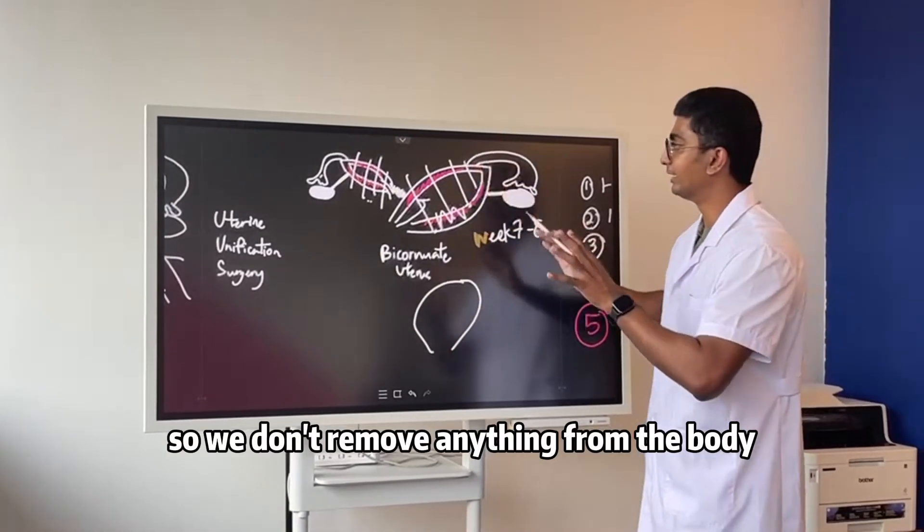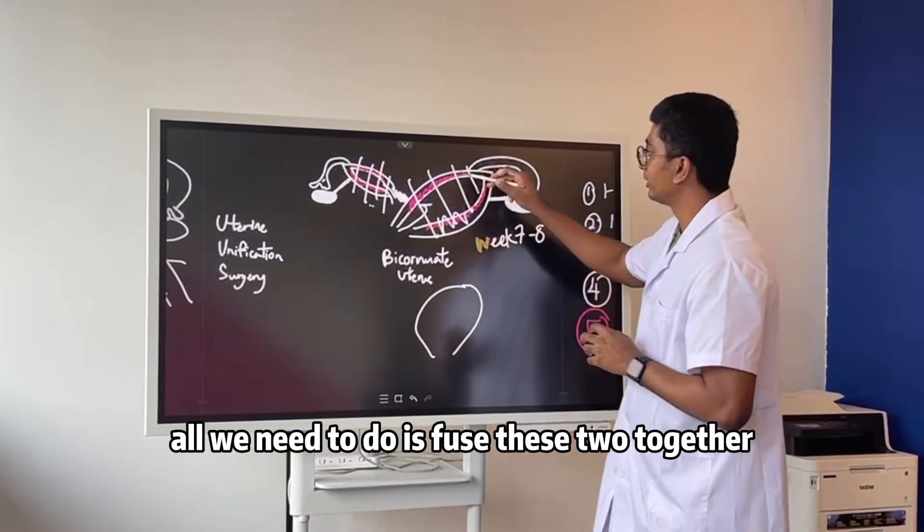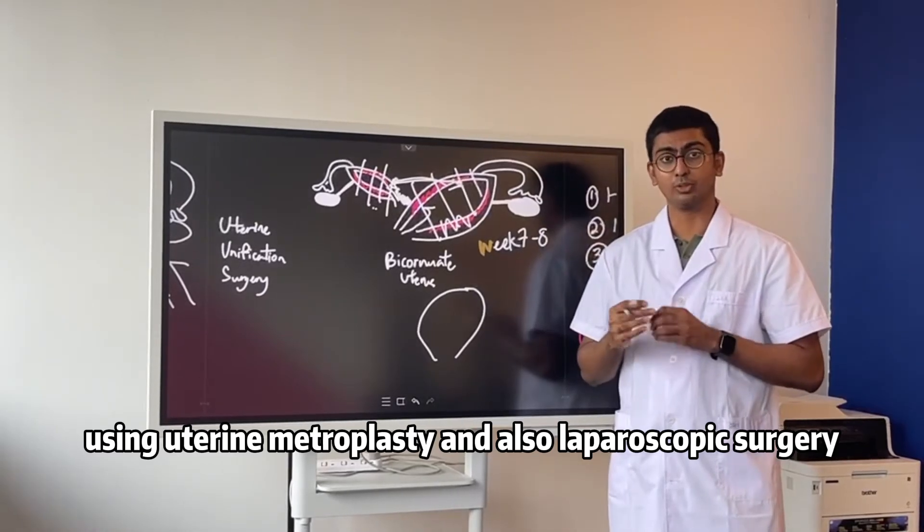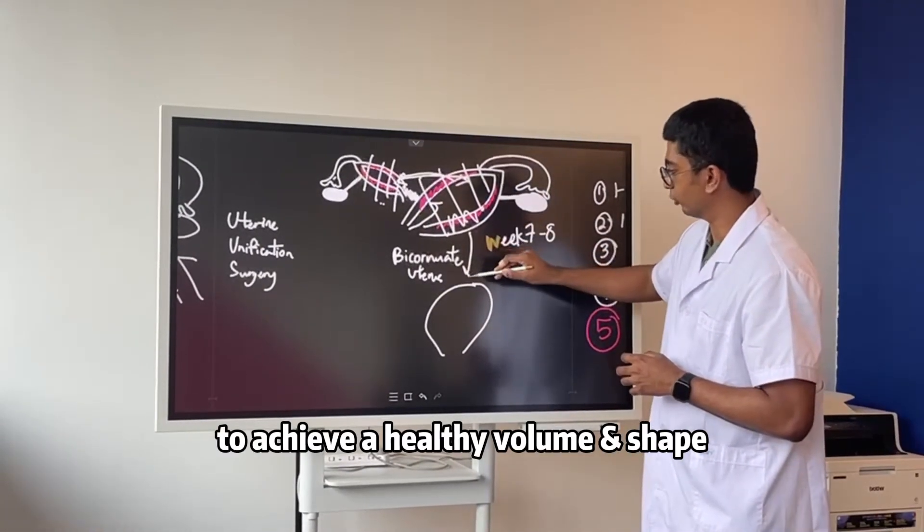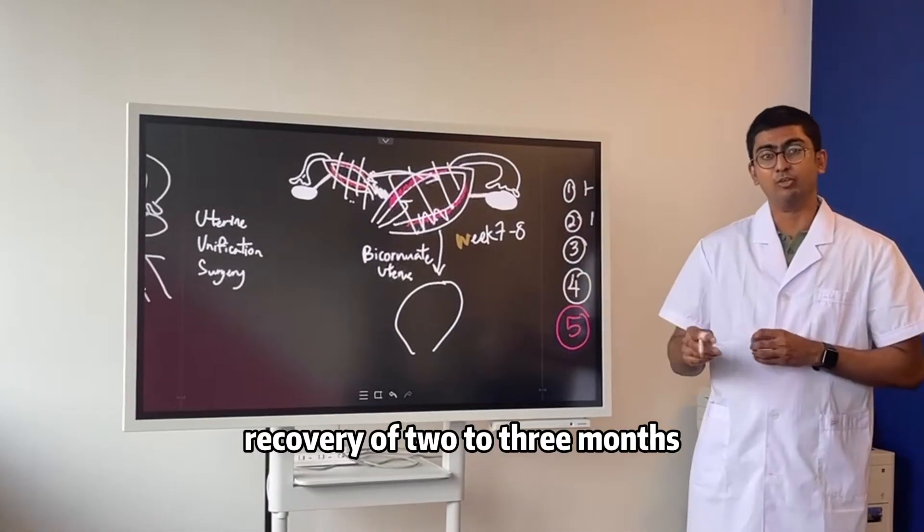So we don't remove anything from the body. We don't need to throw away anything. All we need to do is fuse these two together using uterine metroplasty and also laparoscopic surgery to achieve a healthy volume and shape.